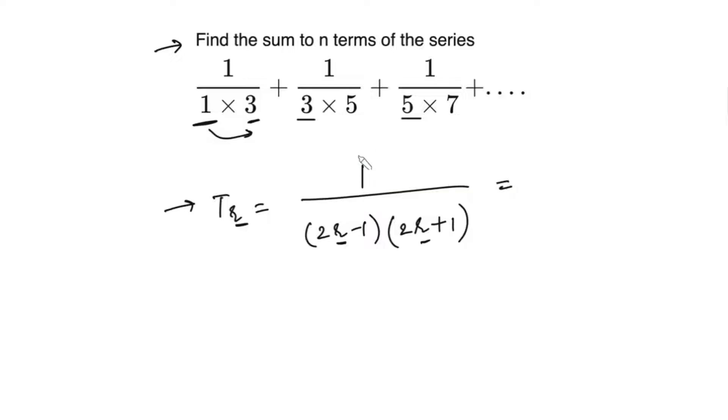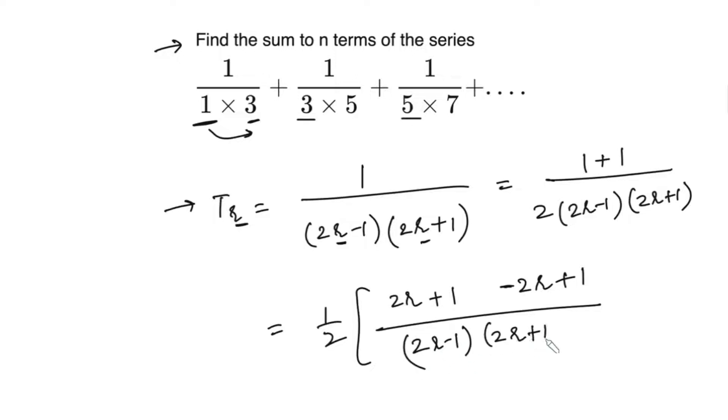In order to manipulate the numerator, I can write it as multiply by 2 and divide by 2, and the 2 in the numerator can be written as 1 plus 1. So we multiply it by 2, divide it by 2, and keep the other two terms the same. Now in the numerator, we can add and subtract 2r. So 2r plus 1, and I am subtracting 2r, so it will be negative 2r, and then you have the plus 1 over (2r-1)(2r+1).